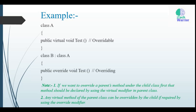Here is a small example. Class A and class B. In class A we define the test method as 'public virtual void test'. In class B we define the test method with the override keyword: 'public override void test'. If we want to override a parent's method under the child class, first that method should be declared using the virtual modifier in the parent class. Any virtual method of the parent class can be overridden by the child if required, using the override modifier. Let's do this practically.